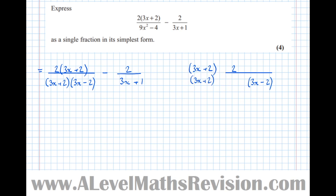Here I've got (3x plus 2) over (3x plus 2), which is just a factor of 1 — a number over itself — so we might as well not write it at all. That's what cancelling is: finding a hidden factor of 1. So we've realised we can write this first term as 2 over (3x minus 2), take 2 over (3x plus 1). Once you're comfortable with the idea of cancellation, you can use the shorthand notation, but for now think of it as a hidden factor of 1.